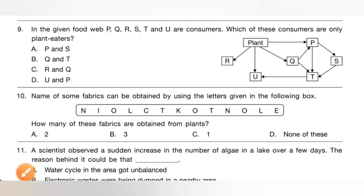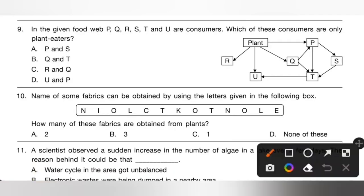Question 9: In the given food web, P, Q, R, S, T and U are consumers. Which of these consumers are only plant eaters? Please pause the video and check the given food web. R, U, Q and P are plant eaters, but U also feeds on animals, making it an omnivore, and P also feeds on animals. So R and Q are the only plant eaters. Option C is the correct answer.